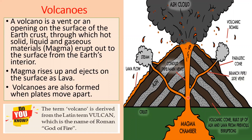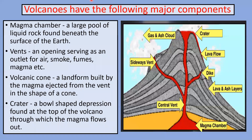When magma flows or erupts on the earth's surface it is called lava. Like solid rock, magma is a mixture of materials. Volcanoes have the following major components. The magma chamber is a large pool of liquid rock found beneath the surface of the earth.